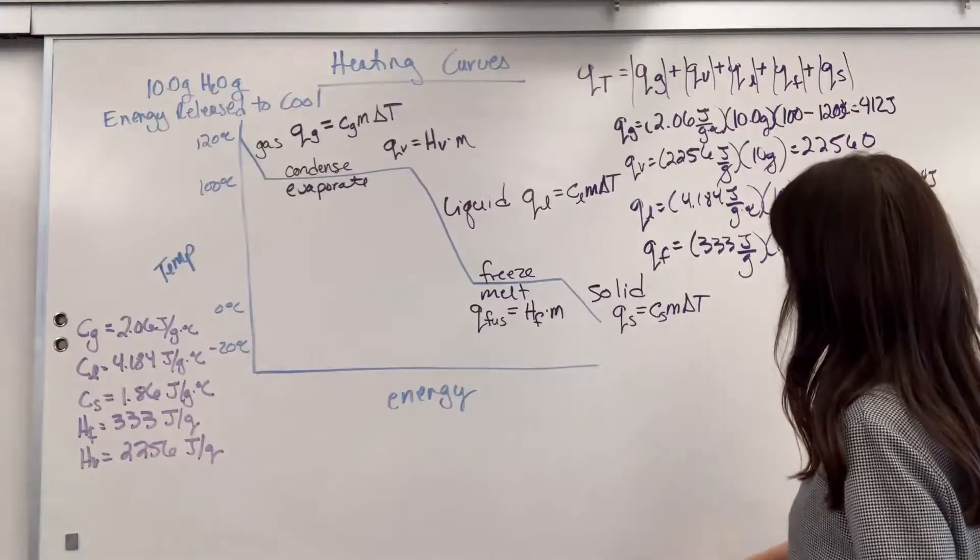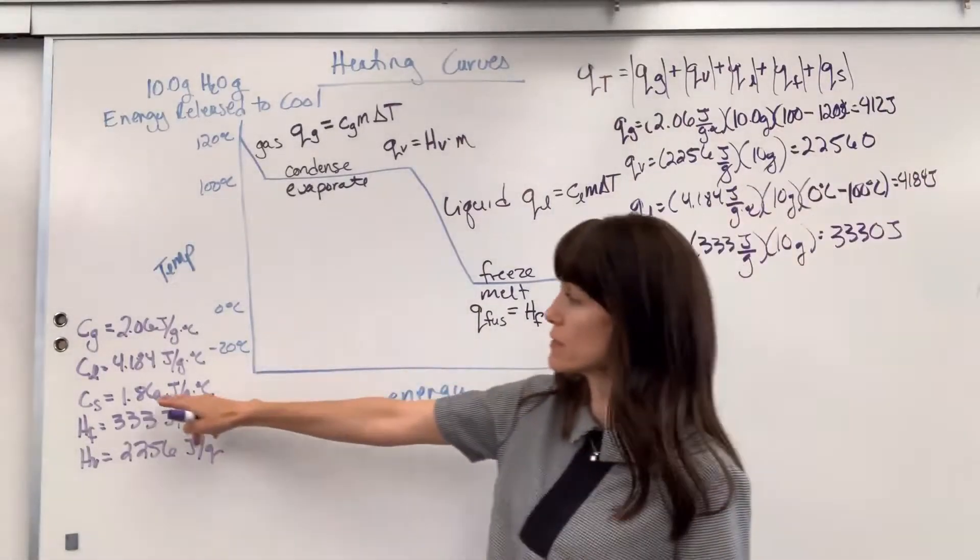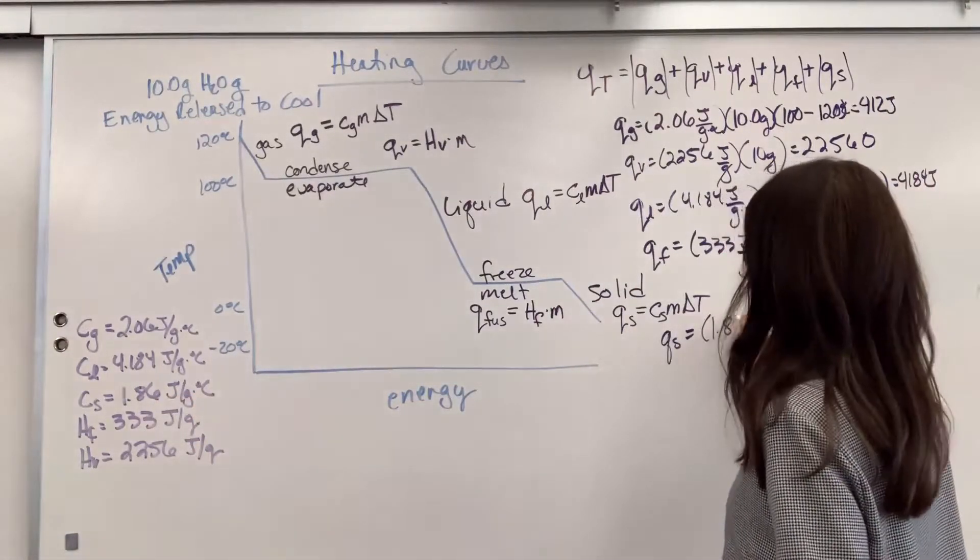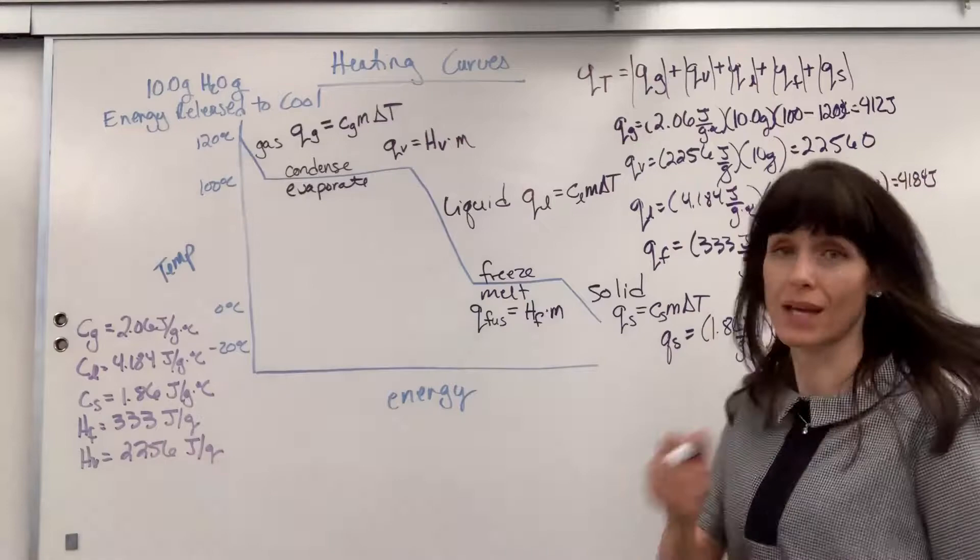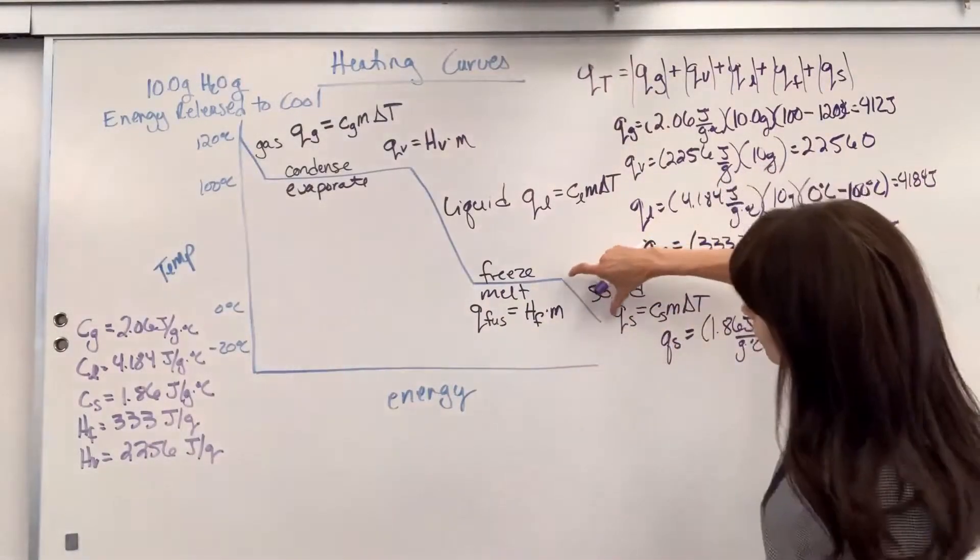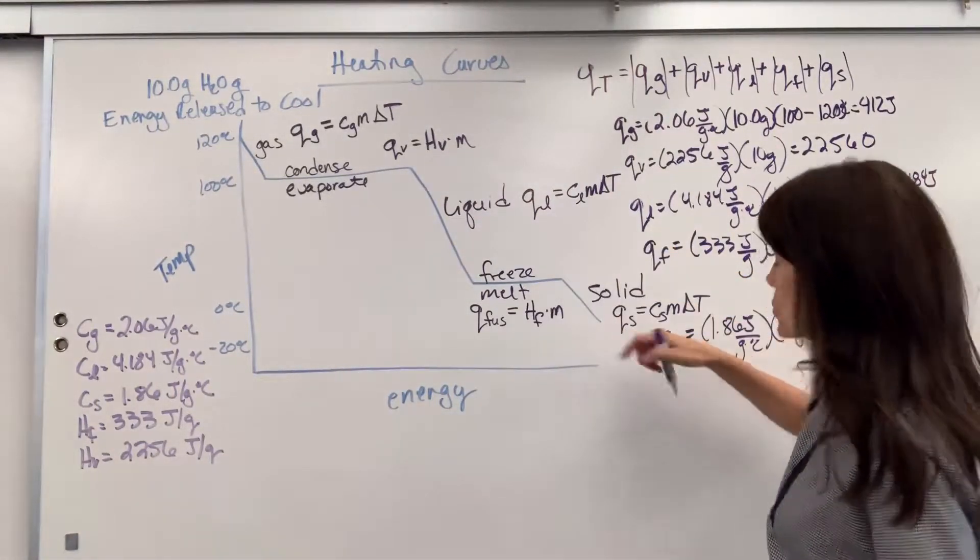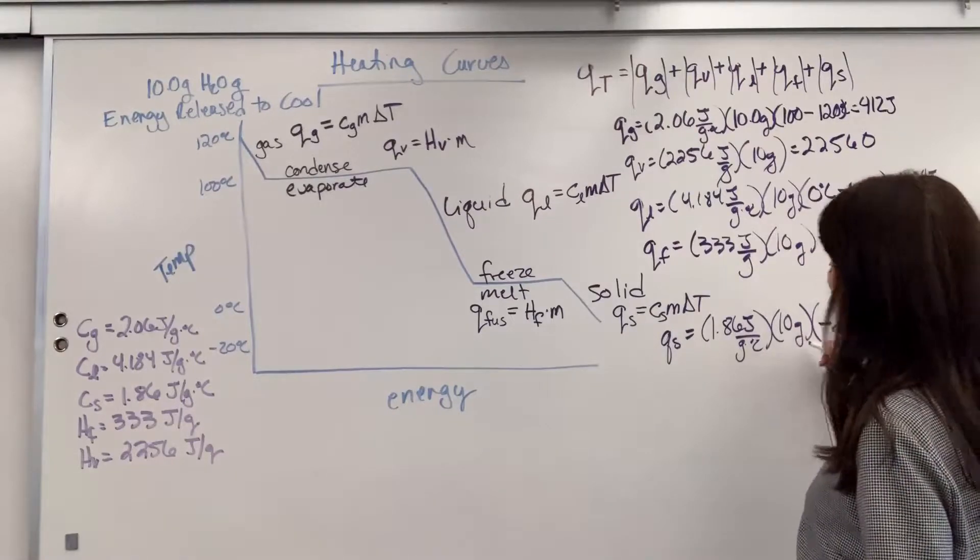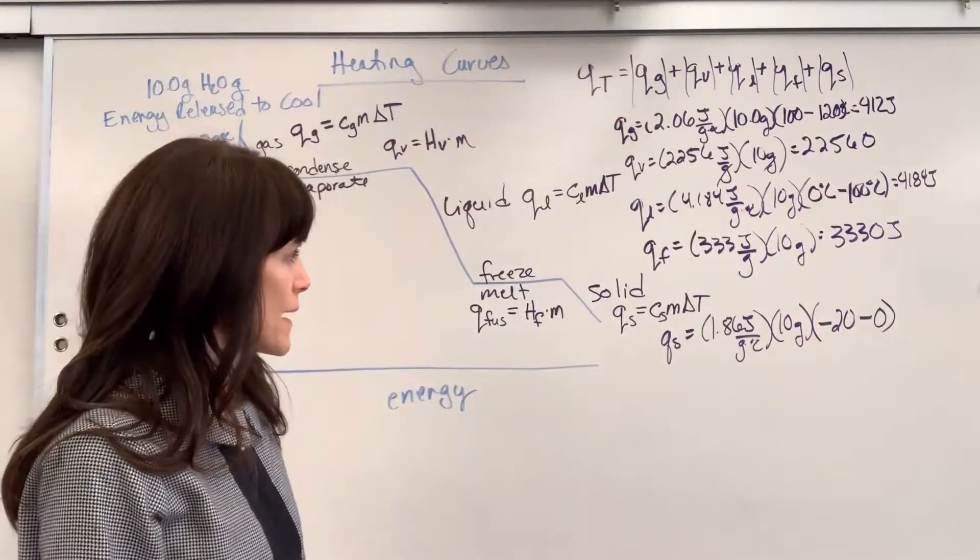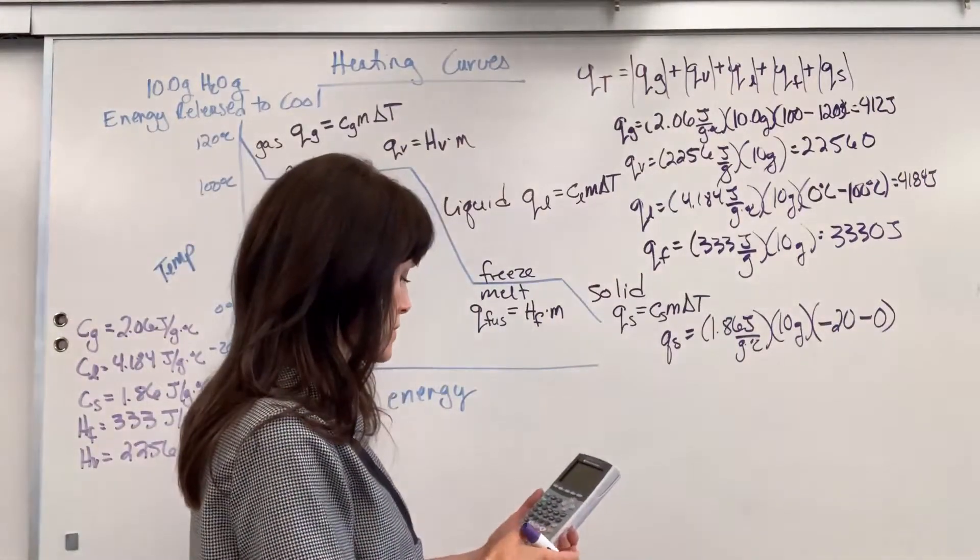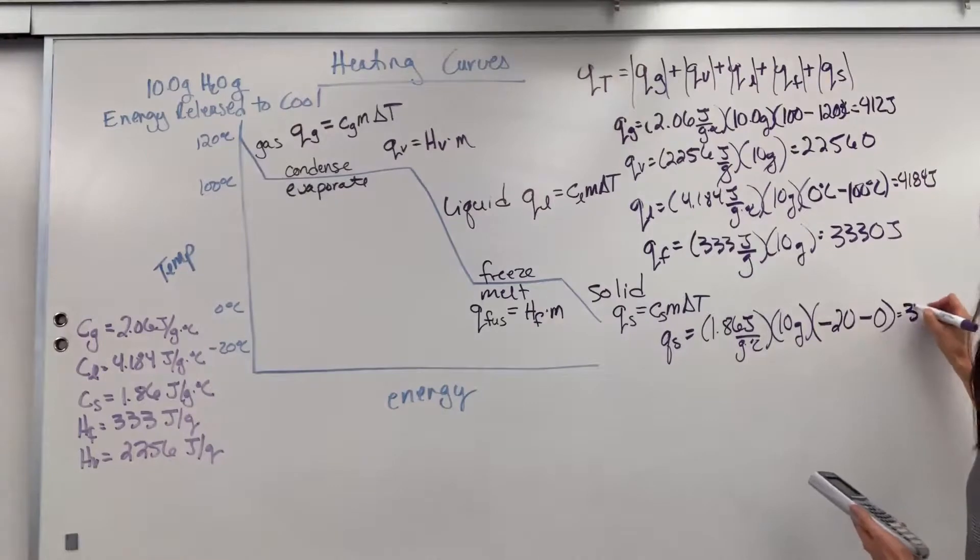And then our last one is going to be Q of the solid. Q of S. Specific heat of the solid is 1.86 joules per gram times our 10 grams times, be careful with that temperature again. We can only look where the C sub S, the specific heat of the solid is, right down here. Final temperature, negative 20 minus the initial temperature of zero. And again, I'm going to do an absolute value on that. So, we are going to have 10 times 1.86, which gives us 372.